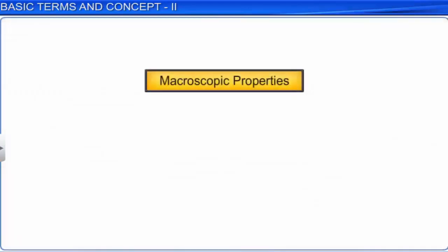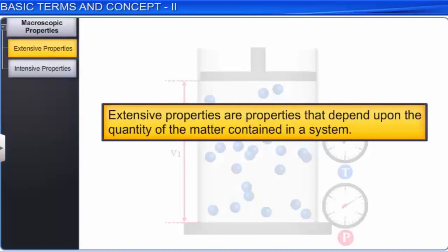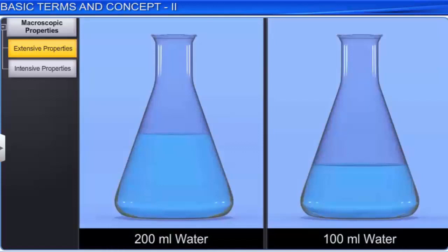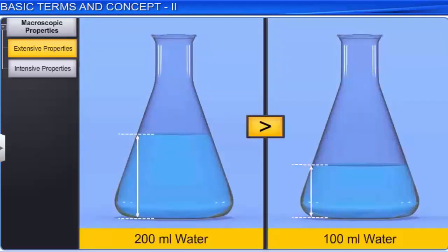Macroscopic properties on which the state of a system depends are further divided into extensive properties and intensive properties. Extensive properties are properties that depend upon the quantity of matter contained in a system. Examples of extensive properties are mass, volume, and heat capacity. For example, 200 millilitres of water takes up more volume than 100 millilitres of water.